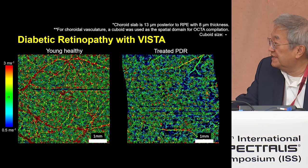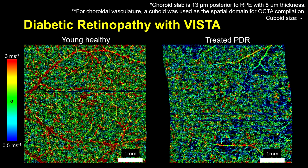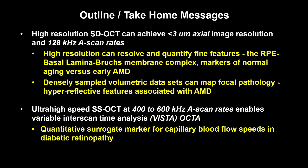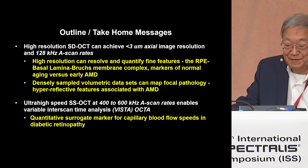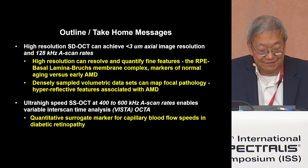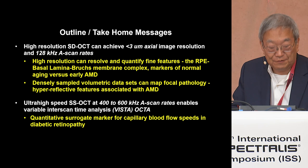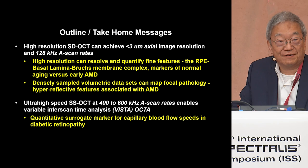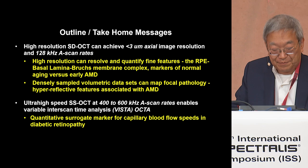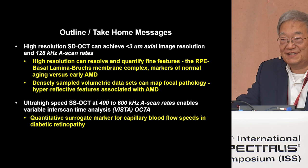We also see changes in the choriocapillaris associated with diabetic retinopathy. This type of method can potentially be used to assess flow impairment, which may be an early marker preceding capillary non-perfusion. In summary, we discussed high resolution and volumetric techniques to assess focal pathology, as well as ultra-high speed OCT angiography techniques to develop a surrogate marker for capillary blood flow speeds. This gives a sense of the potential for current and next-generation OCT applications. Thank you very much.